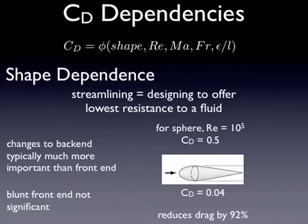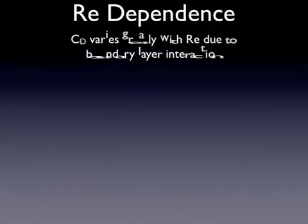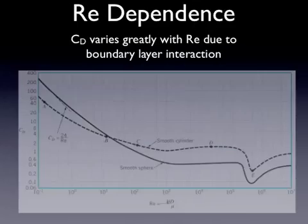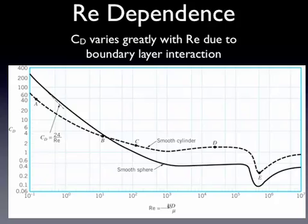That's about all I'll cover on shape dependence — it's very complicated and very application specific, so you'll learn from experts in your field what matters. It's also useful to look at Reynolds number dependence. The coefficient of drag can vary greatly with Reynolds number, as we've seen in this figure. Over a huge range in Reynolds number, you get about a 4 order of magnitude difference in the coefficient of drag value.